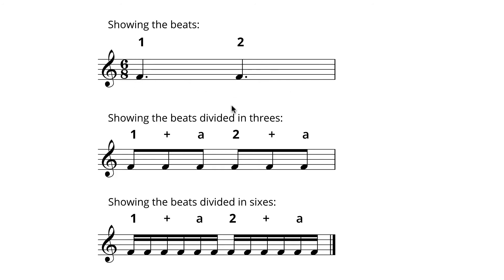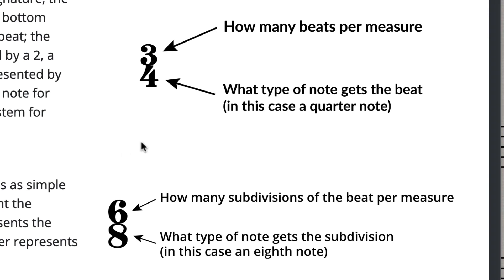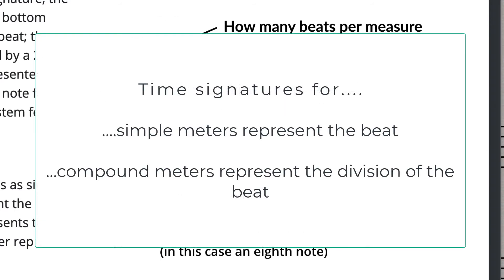Instead, we choose to represent the division of those beats. As soon as we divide two dotted quarters into eighth notes, we get six of them, and that's very easy to represent in a time signature — six of them and they're eighth notes, so we put an 8 on the bottom. That is the big distinction between simple and compound meters: simple meters represent their beats in the time signature, but since we can't easily represent dotted notes, compound meters represent the division of the beat instead.